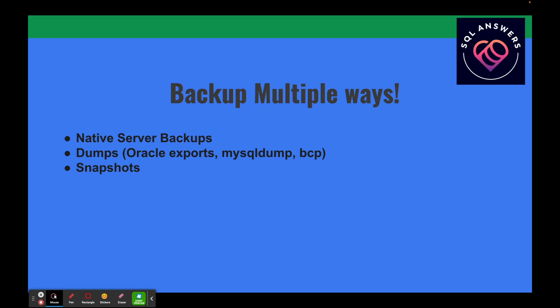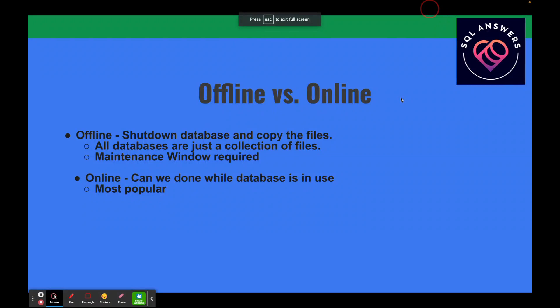The last type of backup is snapshots, which has been enabled by virtual machine technology. You can take a snapshot of a disk that you can later use to restore. The operating system quiesces activity on the disk while the snapshot is running, keeps a log somewhere else, and then when the snapshot is done it applies the pending changes to those files.